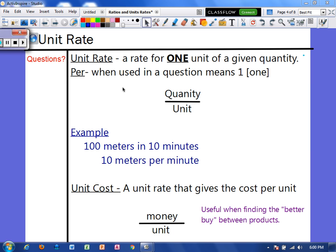So a unit rate is talking about one unit of a given quantity. And often we see the word 'per', and that's kind of cluing us in that it's for one thing. And you'll see what I mean in just a second. So whenever we solve for unit rate, we are going to take the quantity and divide it by the unit. So keep in mind, this means to divide.